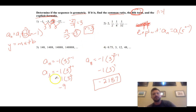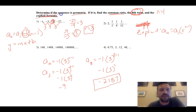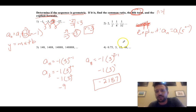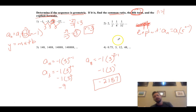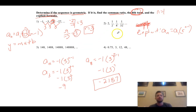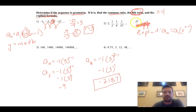Notice it's also asking us to determine if each is a geometric sequence. I will tell you one of these four is not a geometric sequence — it doesn't change by a ratio, it changes by some other thing. So you're going to find one of them as not being geometric, and then you don't do any of those three things for it — you just write 'not geometric.' And you just find those three things for the ones that are geometric.